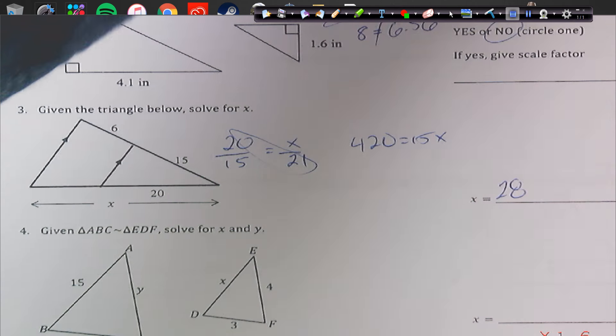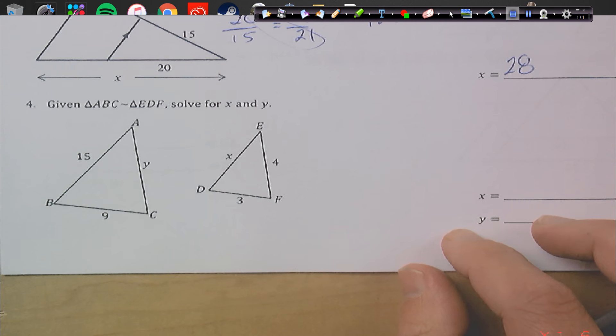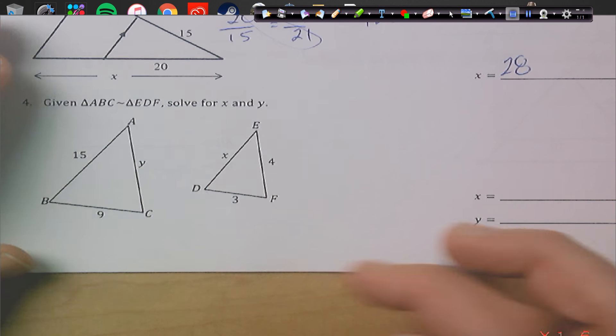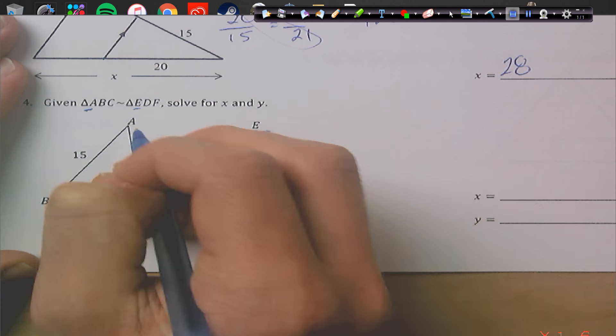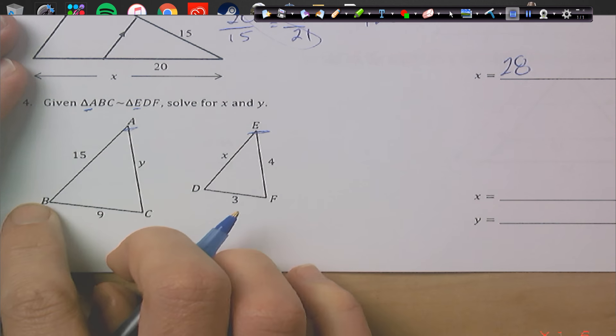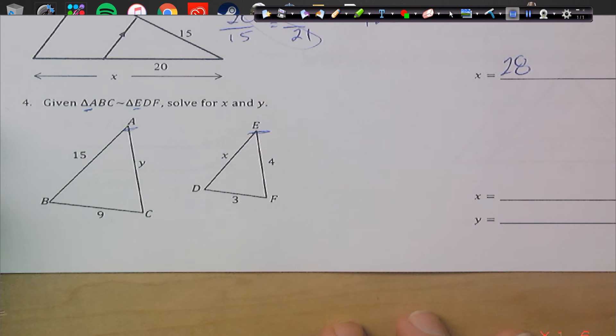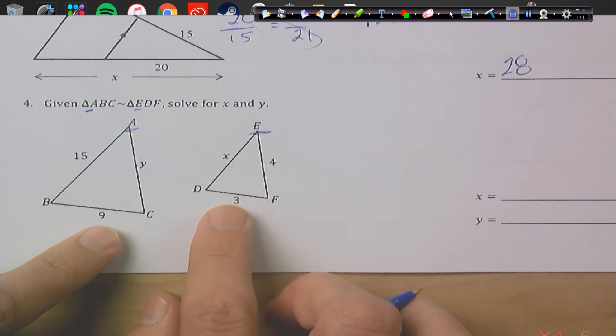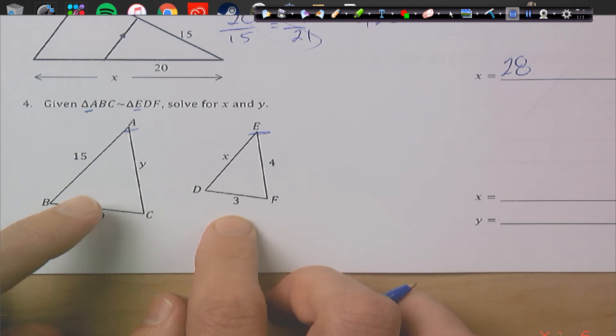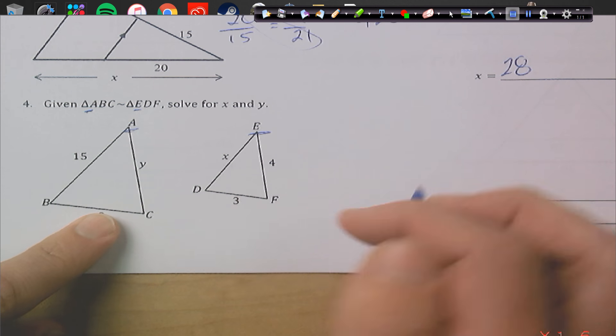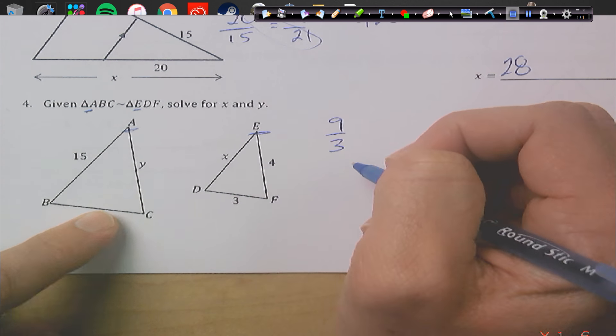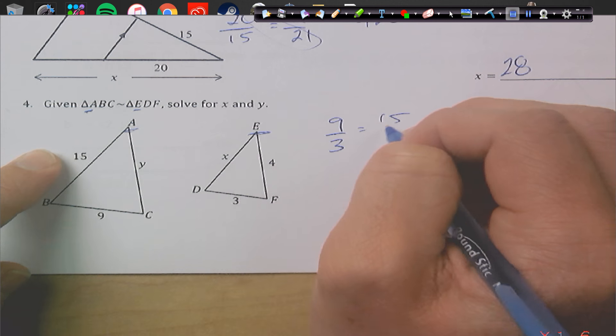Alright, so these are saying that my triangles are similar, solve for x and y. So A is matching up with E, so these guys match. And then D with B, and F with C, so they're actually laid over each other pretty well. You want to start with the sides that we know both of, so we're going to go A, B, C to E, D, F. So I'm going to go 9 to 3, and then we'll do equals 15 to x.